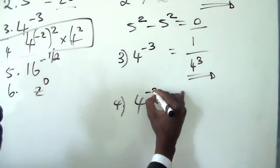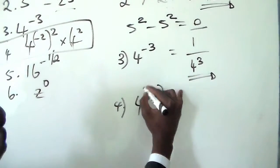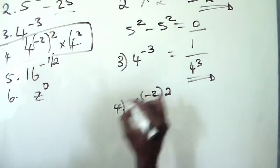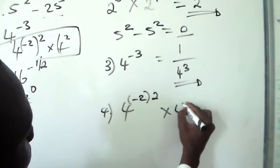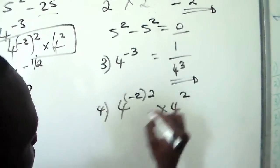Four to the power of minus two, then raised to the power of two, multiplied by four to the power of two.